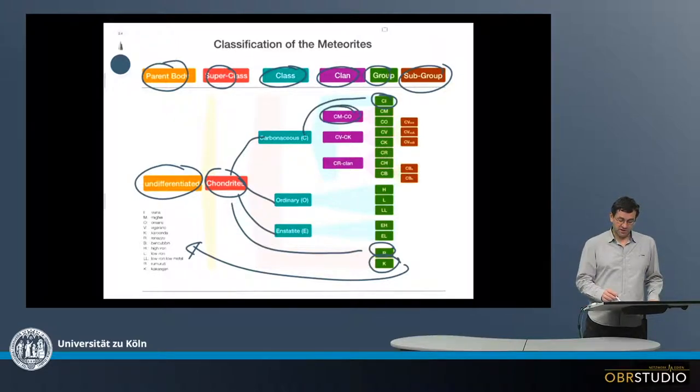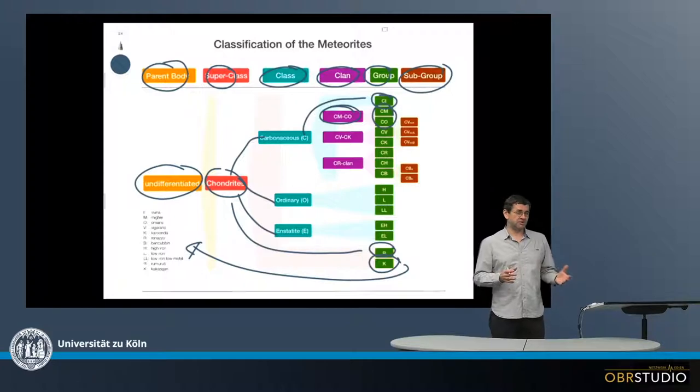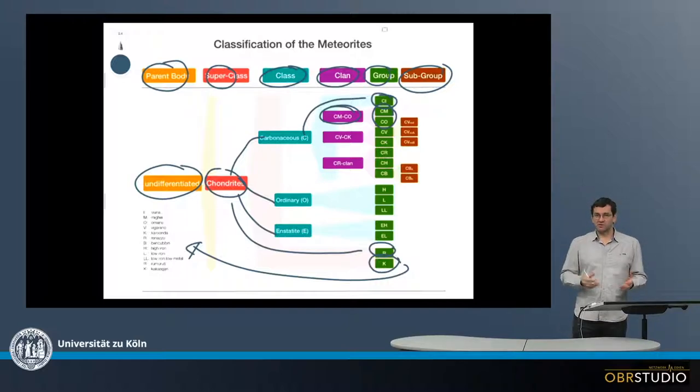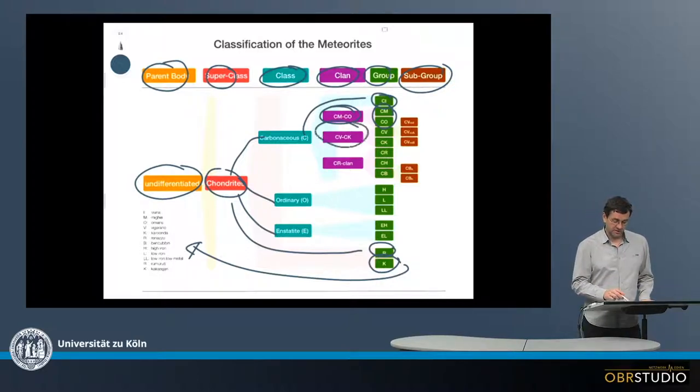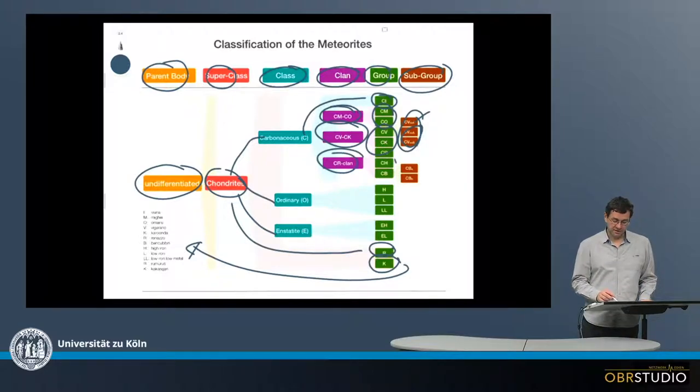For the clans, there are the CM and CO clans, which contain the CM and CO chondrites. A clan means that there are certain genetic relationships or similarities, like CM and CO have very small chondrules, for example. There are also the CV and CK clan with these chondrites, and the CV are further subdivided into a reduced class and an oxidized class. Finally, the CR clan with three subgroups contains the CB chondrites, which are also further subdivided. I'm not going into all the many details here, this is just a rough outline about the classification.